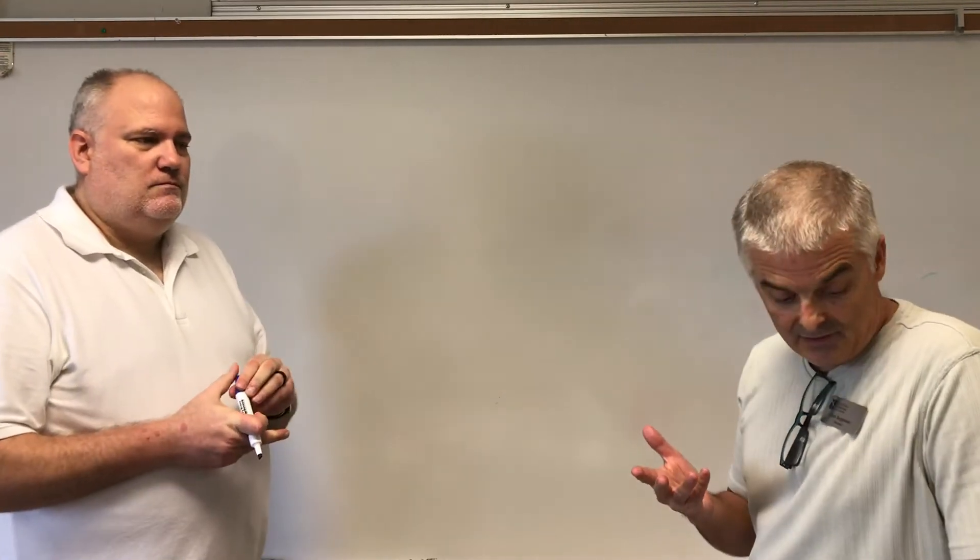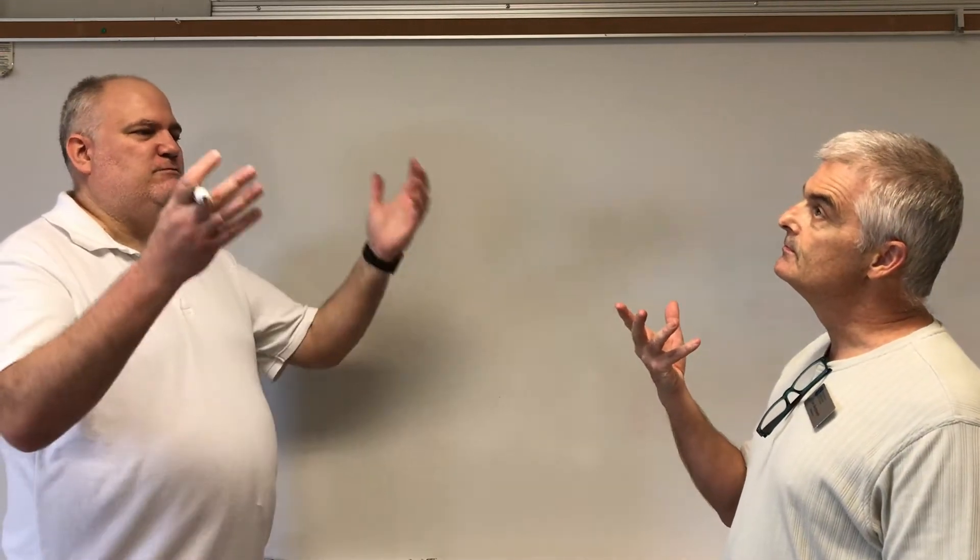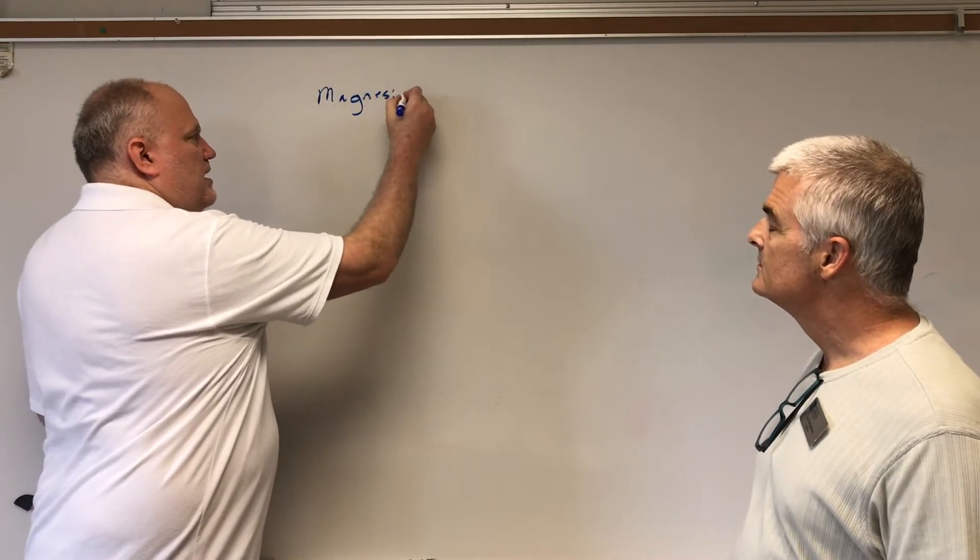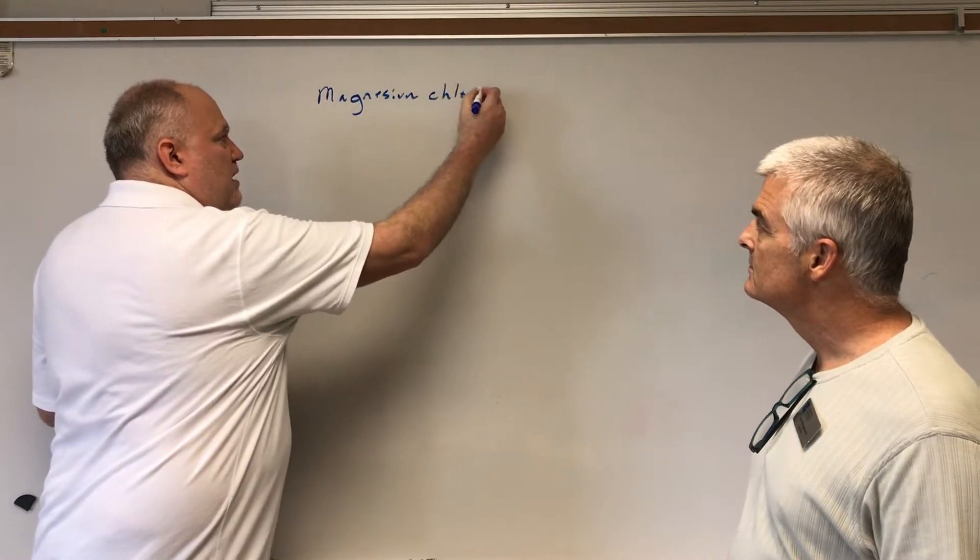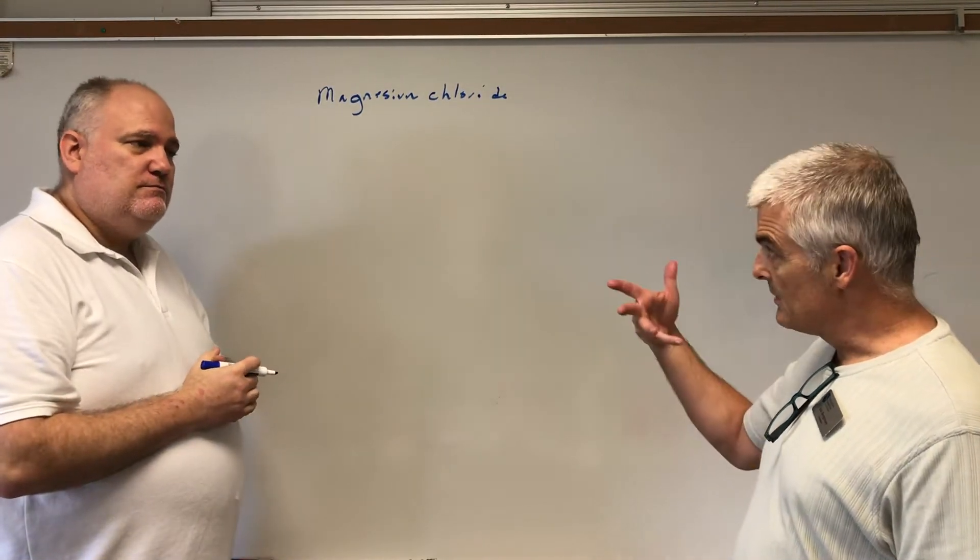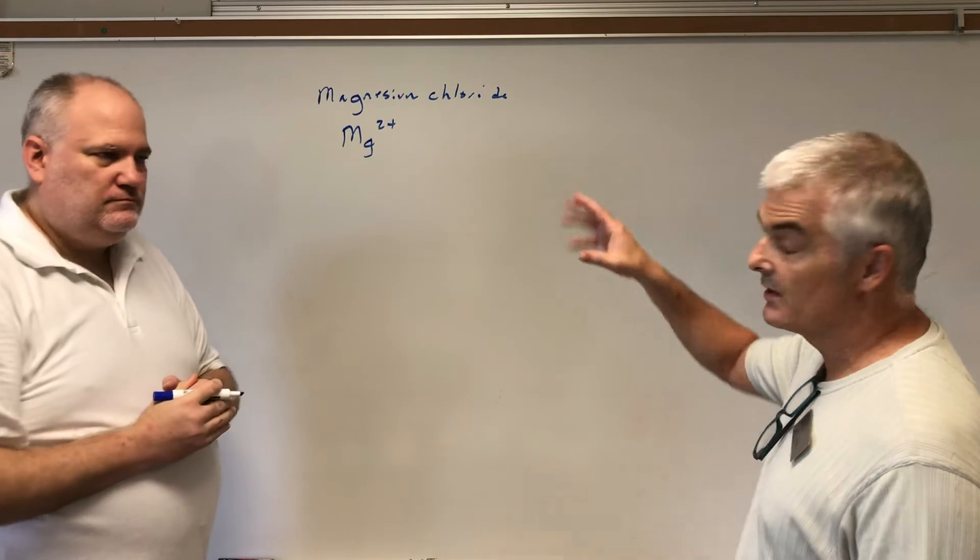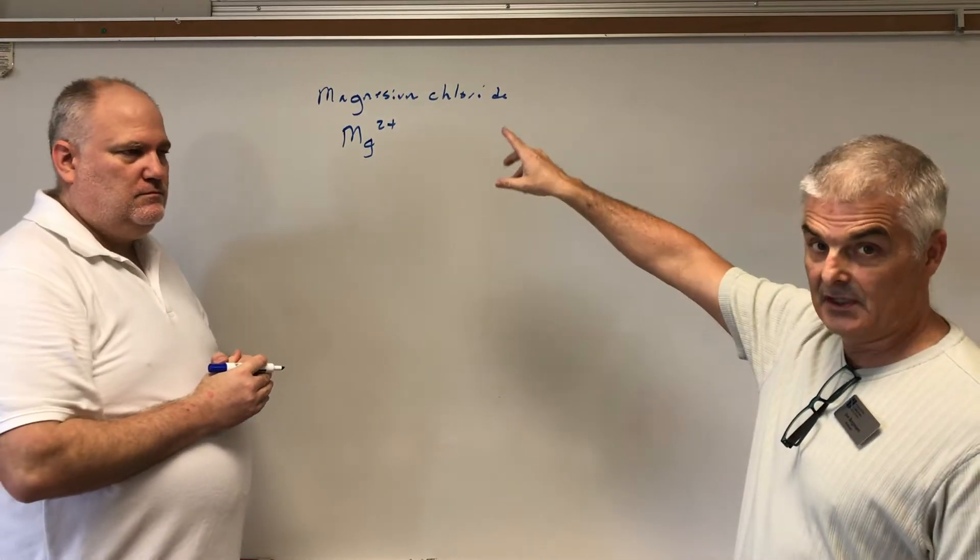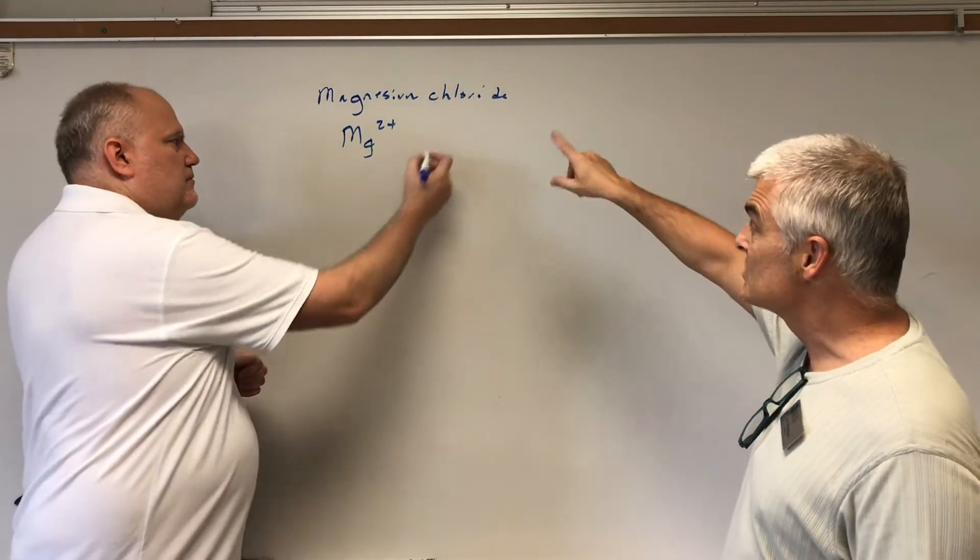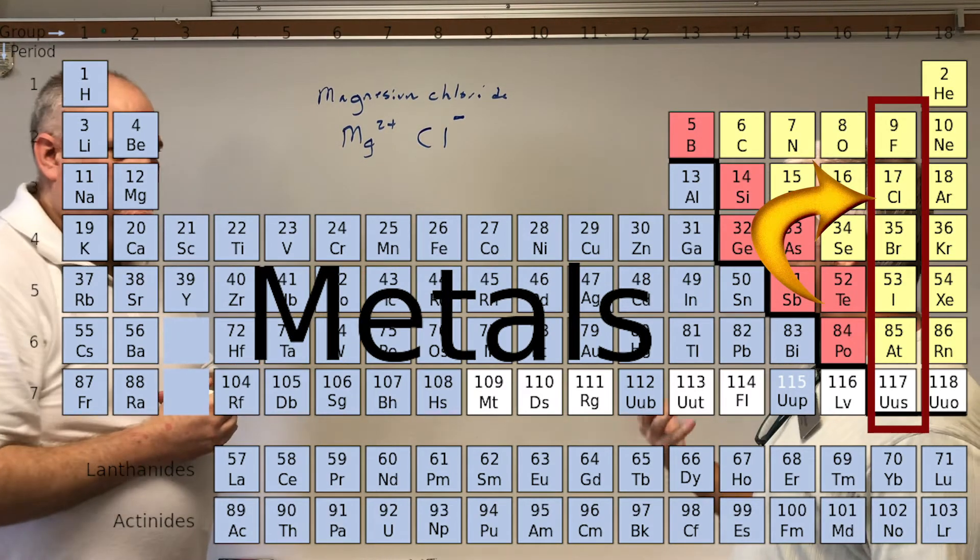Let's see if we can write the formula from magnesium chloride. If you follow the rules here, our first thing that we need to do is figure out what the charges are and the symbols are for each one. On the periodic table, magnesium is in column number two, so his charge will be two positive. Notice he wrote the symbol and he put the charge in the upper right.